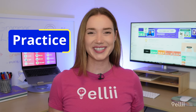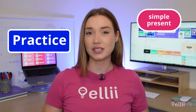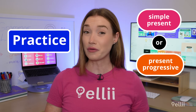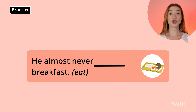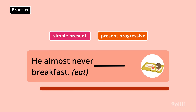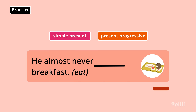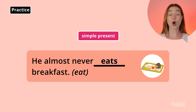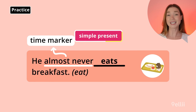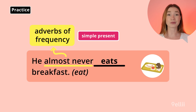Are you ready for some practice? Say or write a simple present or present progressive verb in each of the following sentences. Don't forget to look for the time markers. Look at the verb in parentheses — which verb tense do you need, the simple present or the present progressive? The answer to the first one: he almost never eats breakfast. The time marker is almost never, and we use the simple present tense with adverbs of frequency. Did you remember to use the S ending because the subject is he? Let's try another one.